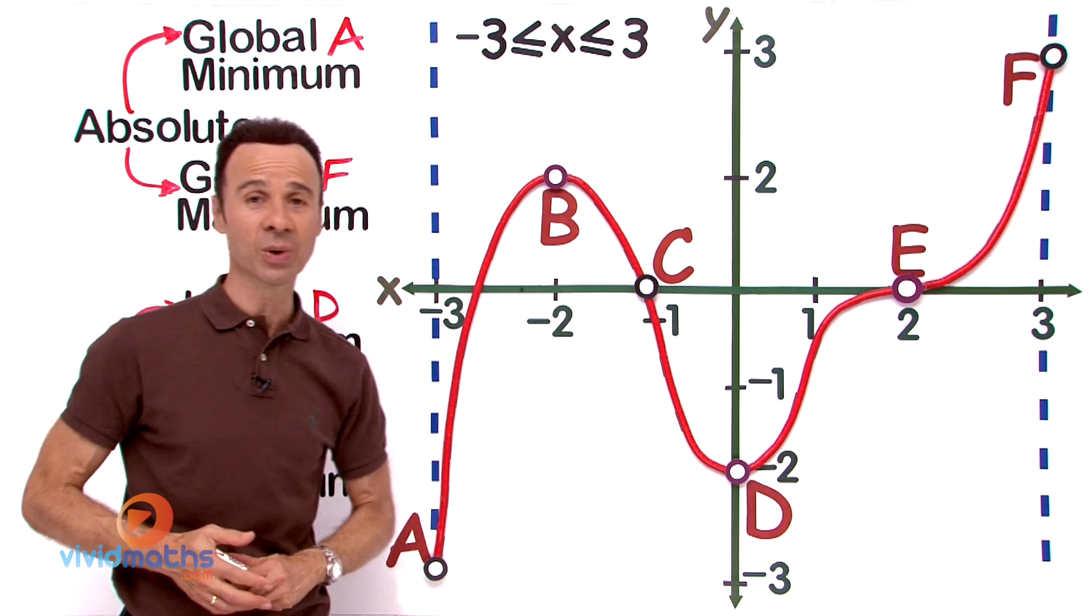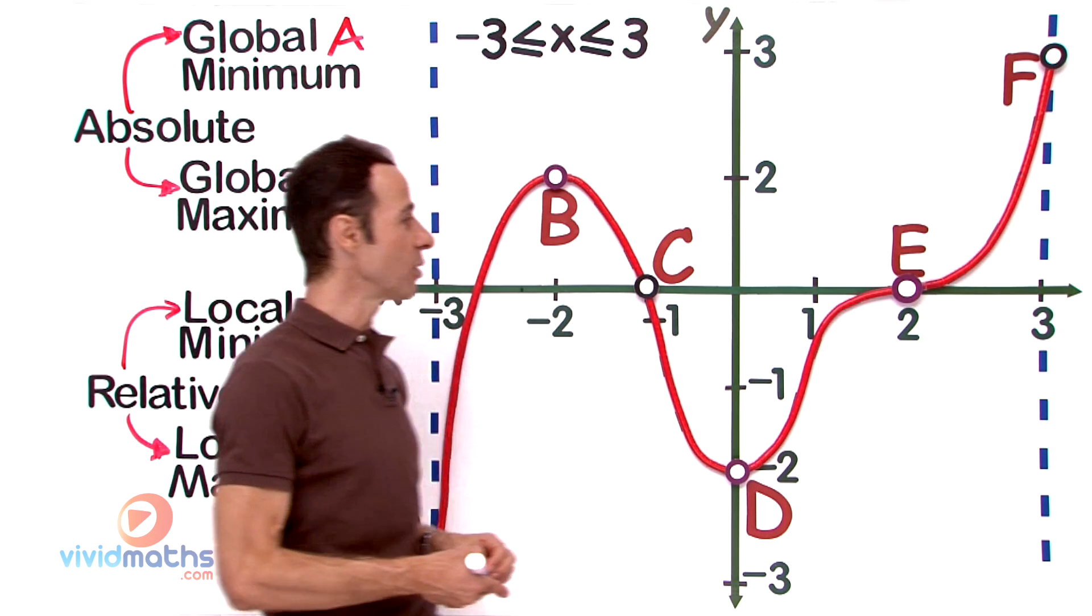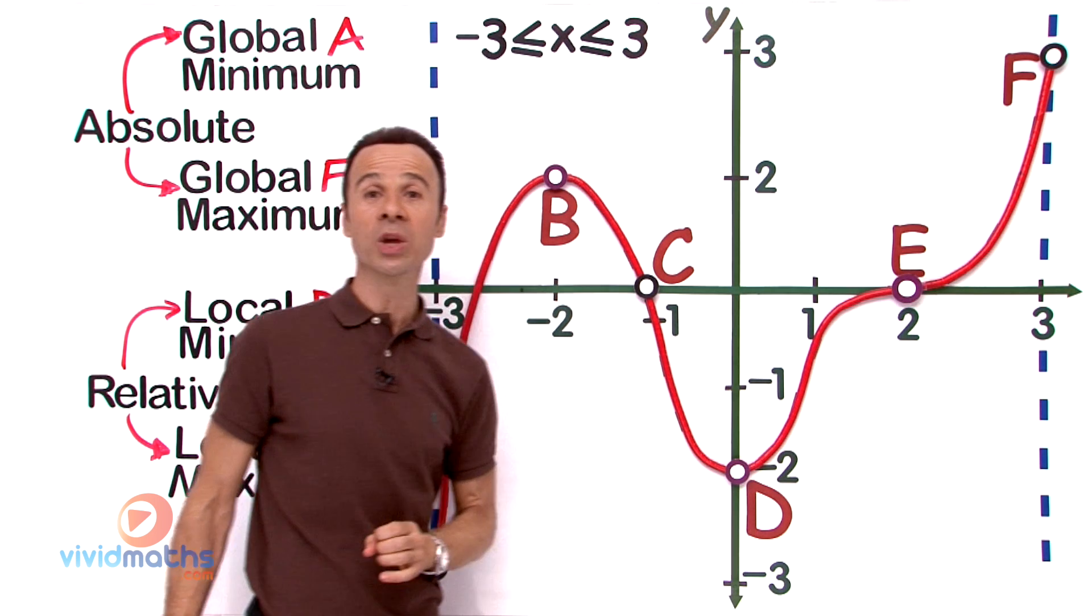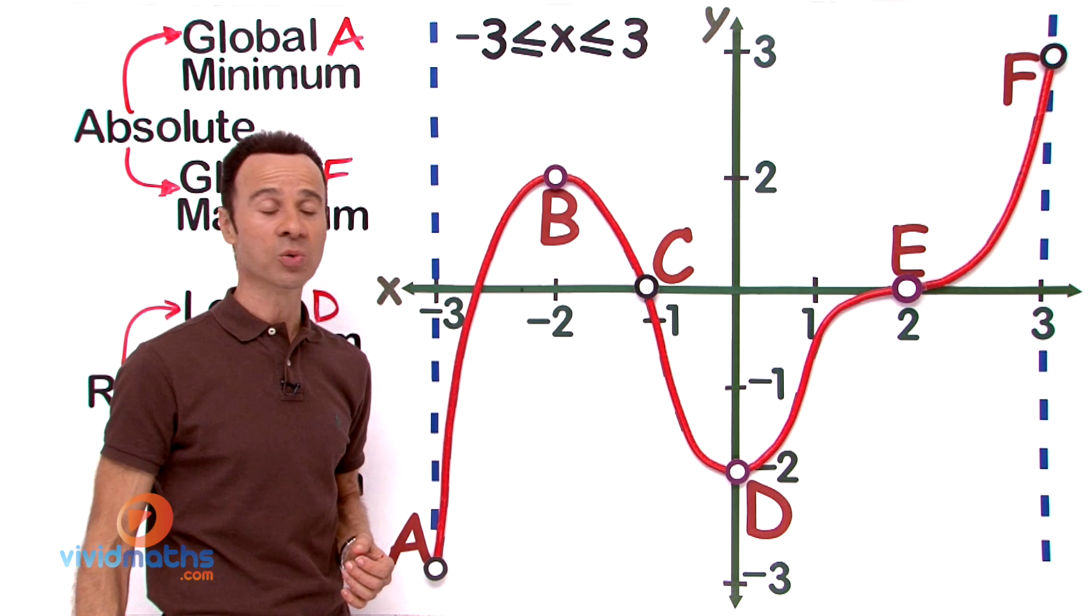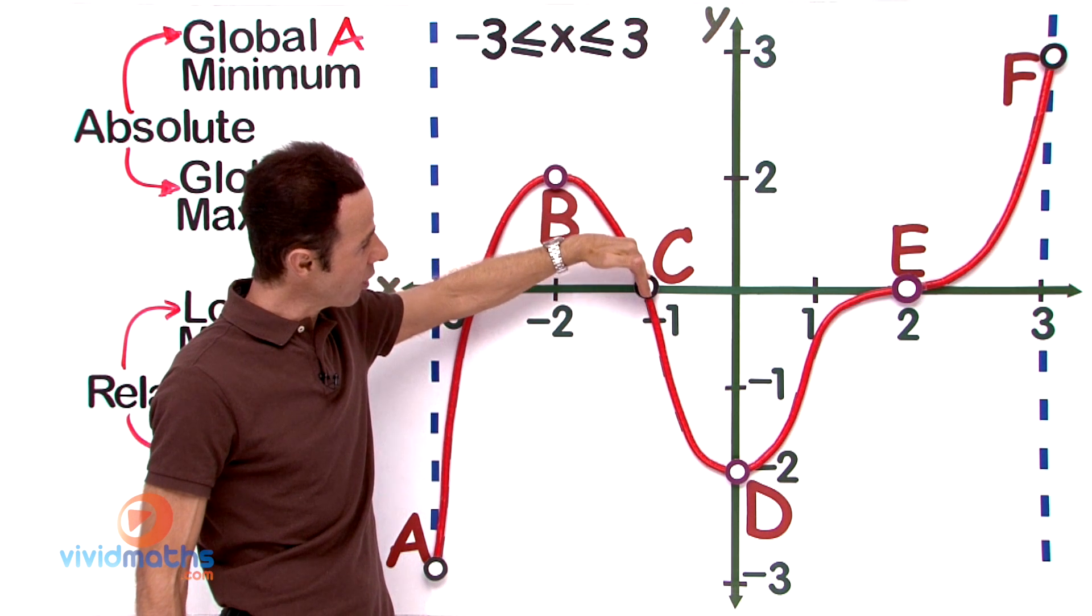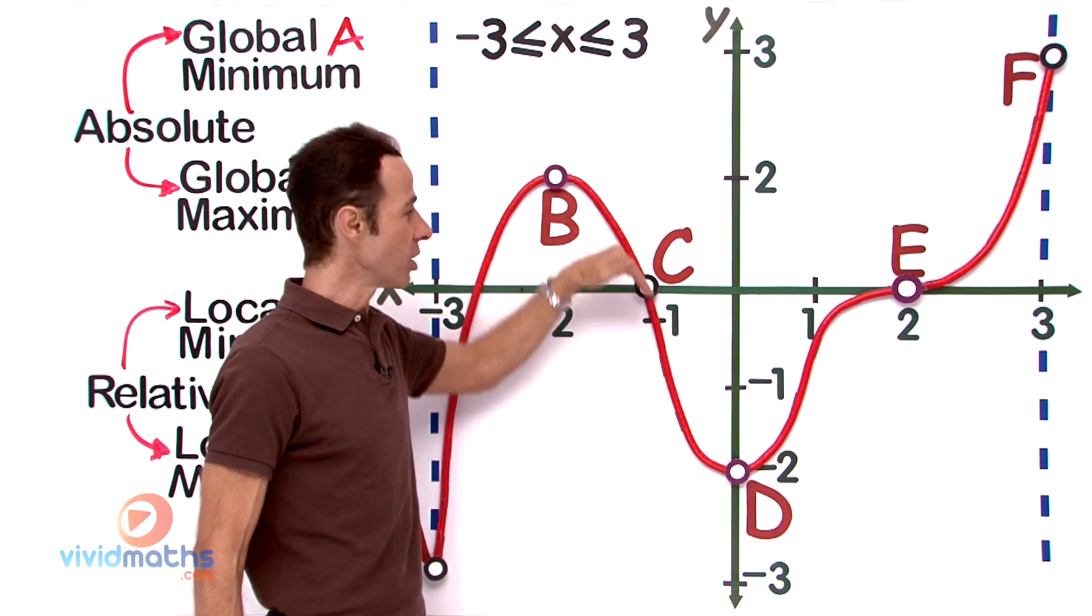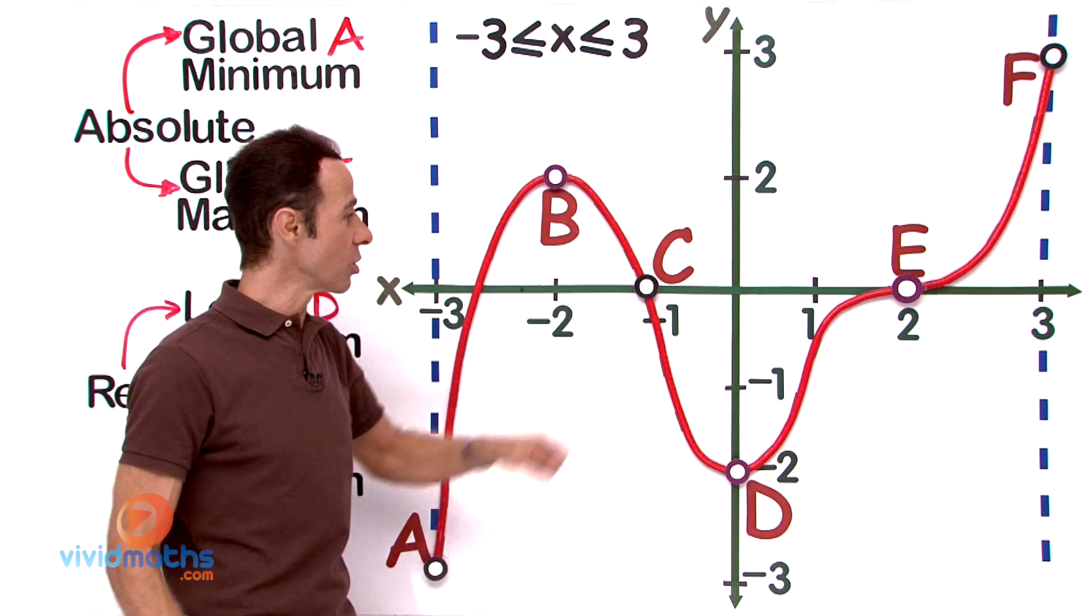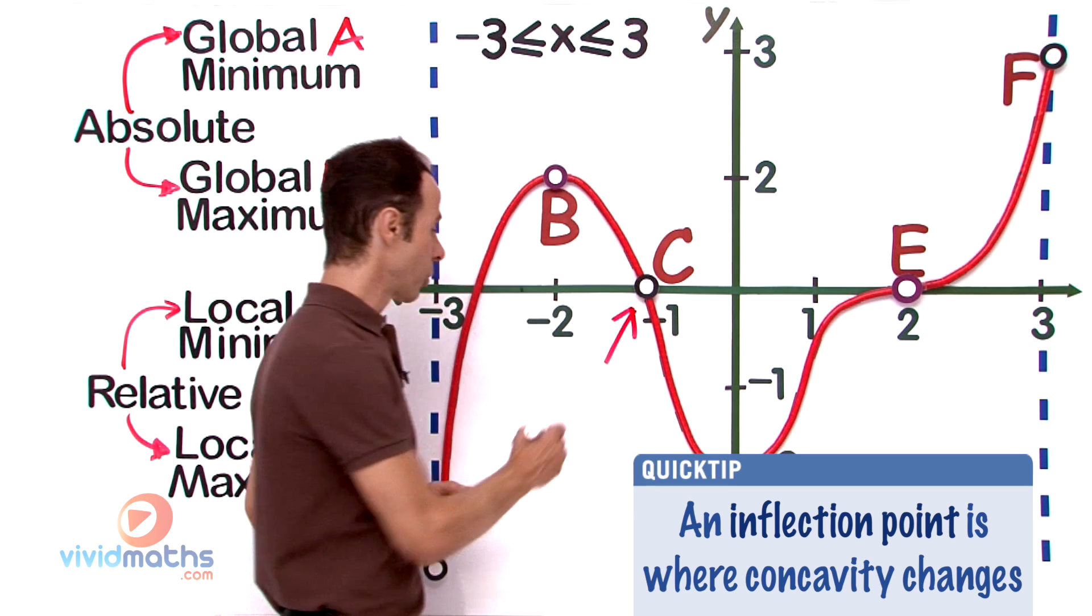But there are two more points we can discuss here, and they are the inflection points. First of all, let us have a look at this inflection point right over here. Now an inflection point is where you get a change in curvature or shape in the actual curve. So you will notice here that it goes from concave down and right here changes to concave up. The point of change is right there—that is referred to as the inflection point, and it is a normal inflection point.